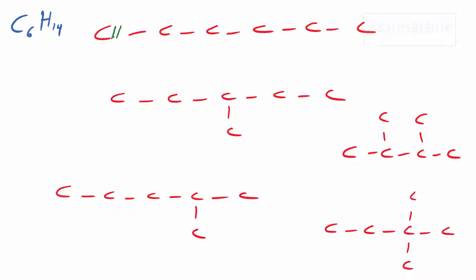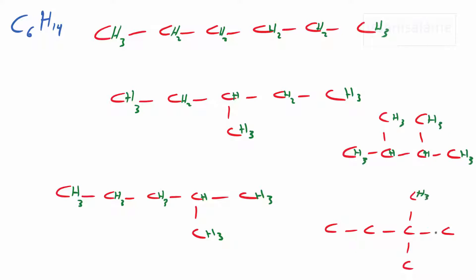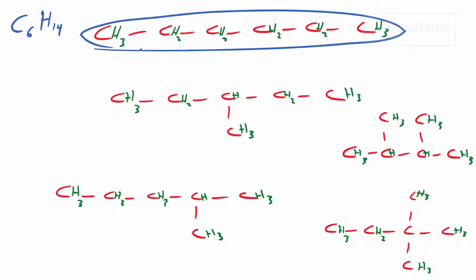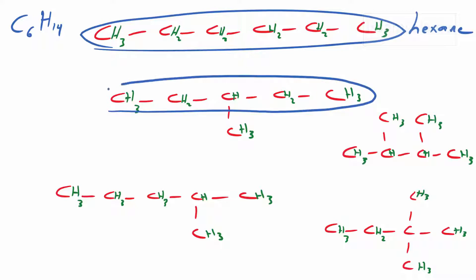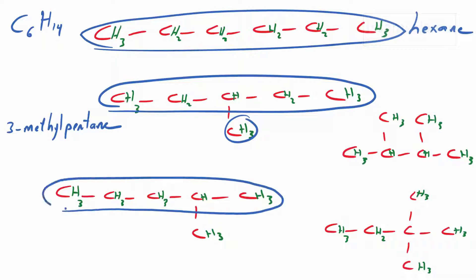Now let me add the hydrogens and start naming. As you know, carbon makes four covalent bonds, so count how many bonds each carbon is already making and complete that number with hydrogens. The first structure is linear, so it's called hexane — six carbon atoms. The second one has a longest chain of five with a methyl group at the third carbon, so it's called 3-methylpentane. The next one also has a longest chain of five, with the methyl coming from the second carbon.